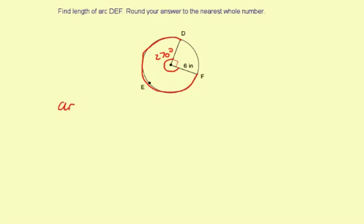So it's going to be the arc length of arc DEF to 2πr equals measure of arc DEF to 360 degrees. So we know the arc measure is 270 degrees, so let's substitute that in. And we also know the radius is 6 inches, so let's substitute that in.